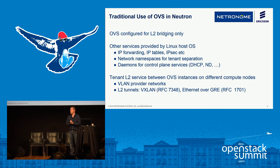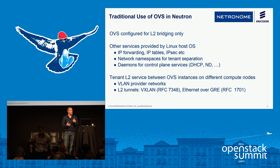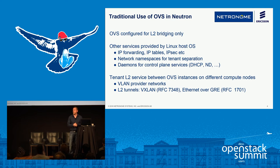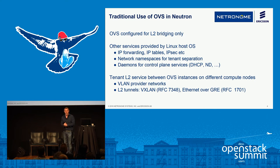So to start out, OVS is primarily a Layer 2 type device. Usually we just need to be able to get some kind of Layer 2 service provided into the VMs, which works great and solves most of the use cases that are typically out there today. And then if you needed to do any kind of additional Layer 3 functionality, that was typically done on the Linux OS itself — like IP forwarding, IP tables, things like that.